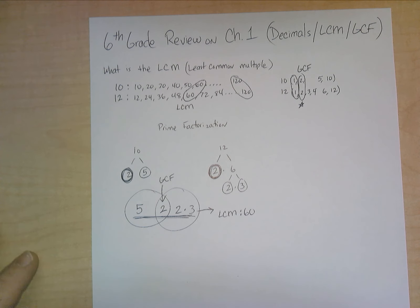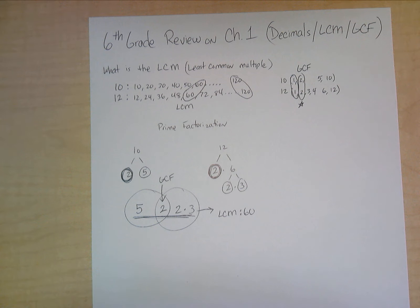So instead of doing the listing method and finding out this way, you can do prime factorization, list out all your factors in its respective circles in the Venn diagram, find out your greatest common factor in the shared area, and then all the numbers being multiplied together gives you the least common multiple.